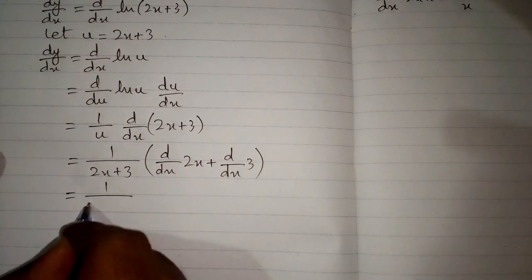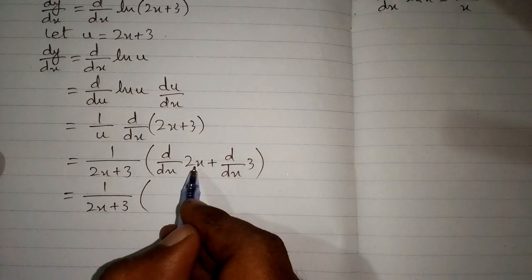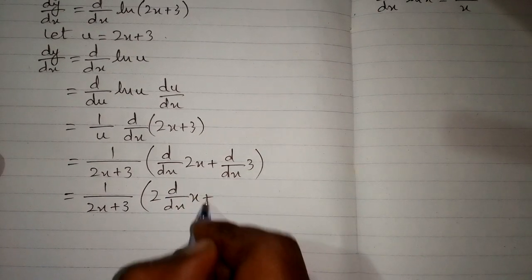Now this can be written as 1 upon 2x plus 3, and the derivative terms can be expanded.